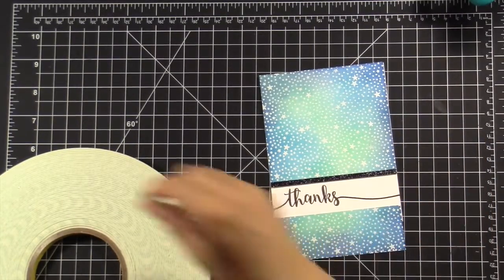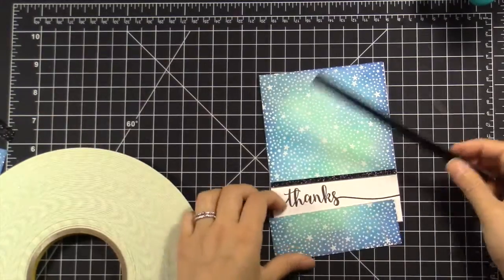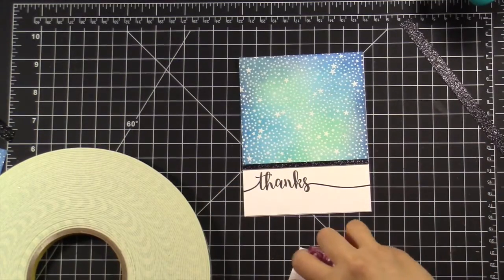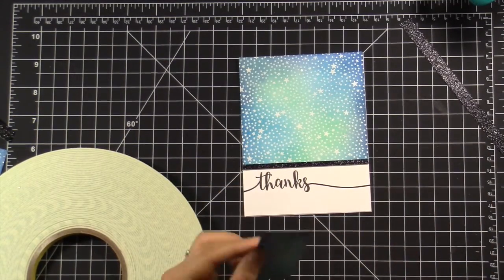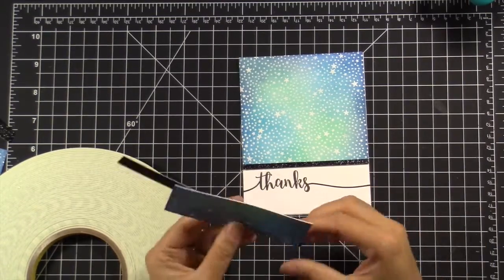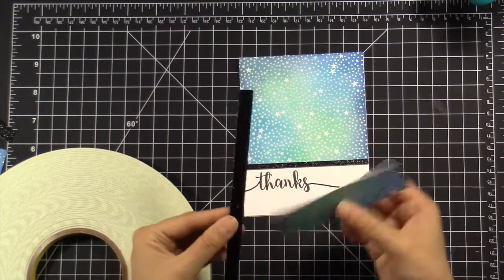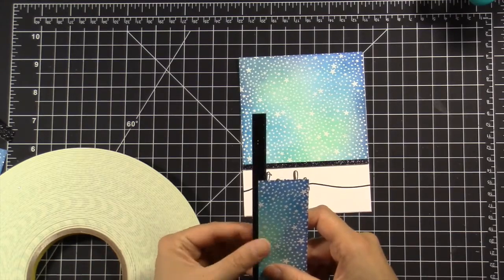Once I went ahead and attached the top panel, I decided that I wanted to attach the bottom panel as well. I was kind of on the fence as to whether I would leave the bottom just blank white, and had I moved the sentiment down just a little bit, I probably would have left it.